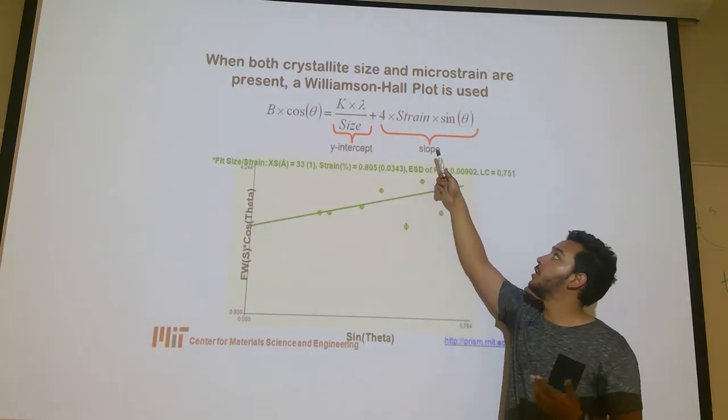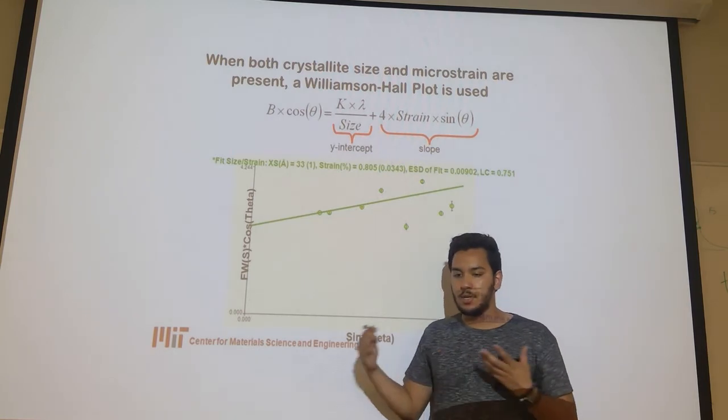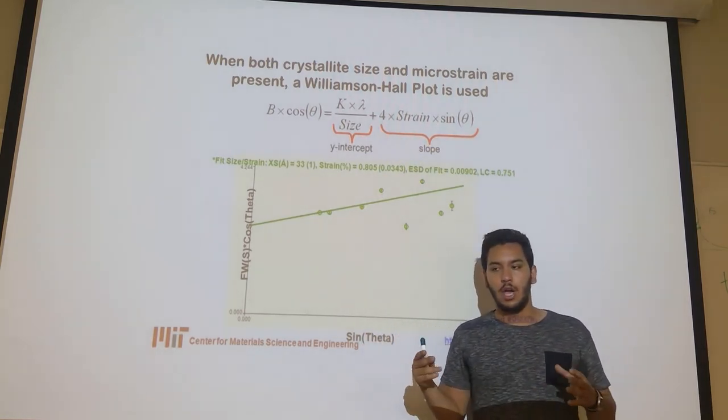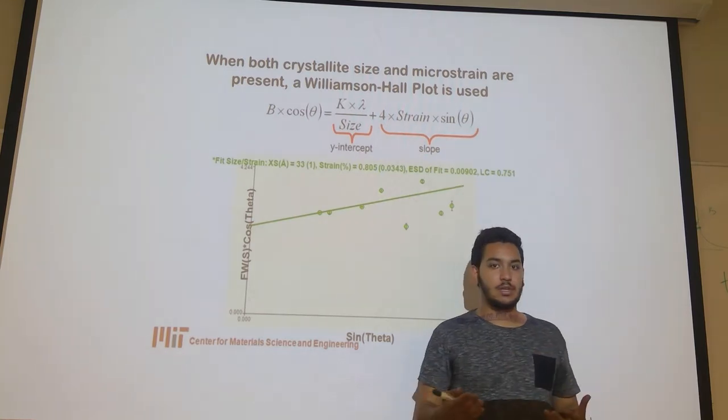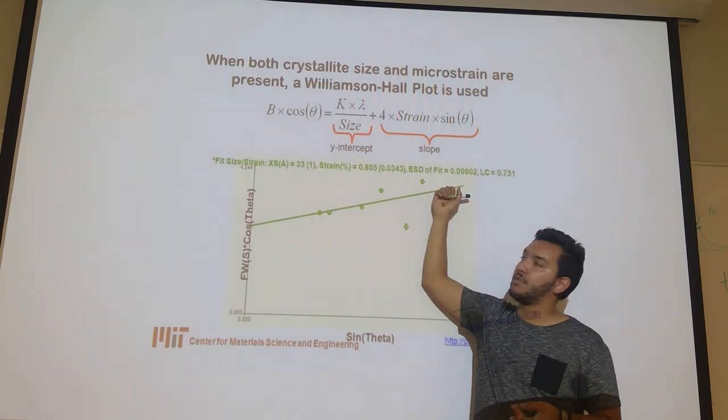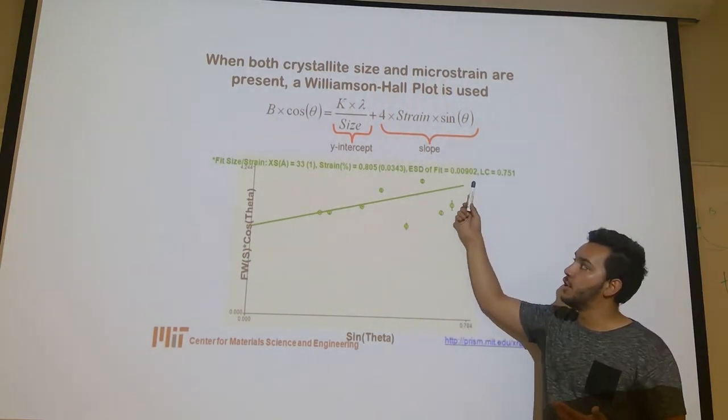The other part, the Williamson-Hall, talks about strain. What we can get from this is how much strain there is in the material and what characteristics it has from the width of the peak. Together, we have the Williamson-Hall method, which plots out into something like this. First of all, the y-intercept is the Scherrer equation.